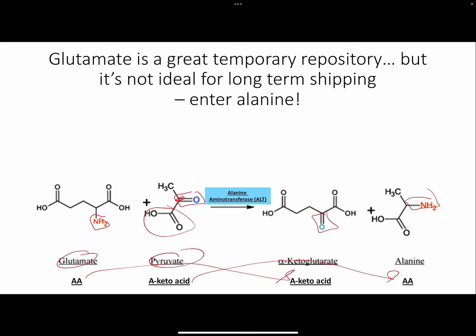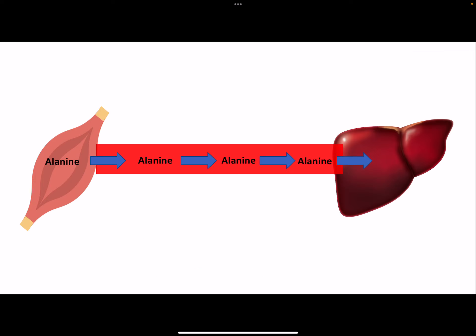You don't have to memorize every ketoacid pair - just know the ones discussed in this lecture. The key point: this specific transaminase matters because glutamate might be good storage for ammonium, but we're doing this in the muscle. Glutamate is not allowed through the blood, but alanine is. So we convert it into alanine so it can travel through the blood to the liver.